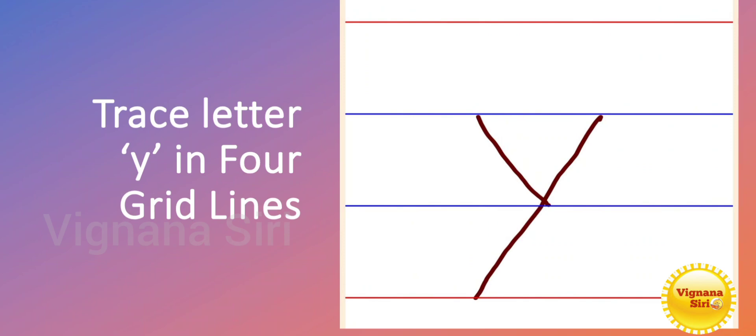So, we will observe how much tracing is left. Let's go to the left slanting line, then the downward line. That is small letter Y. Very easy.